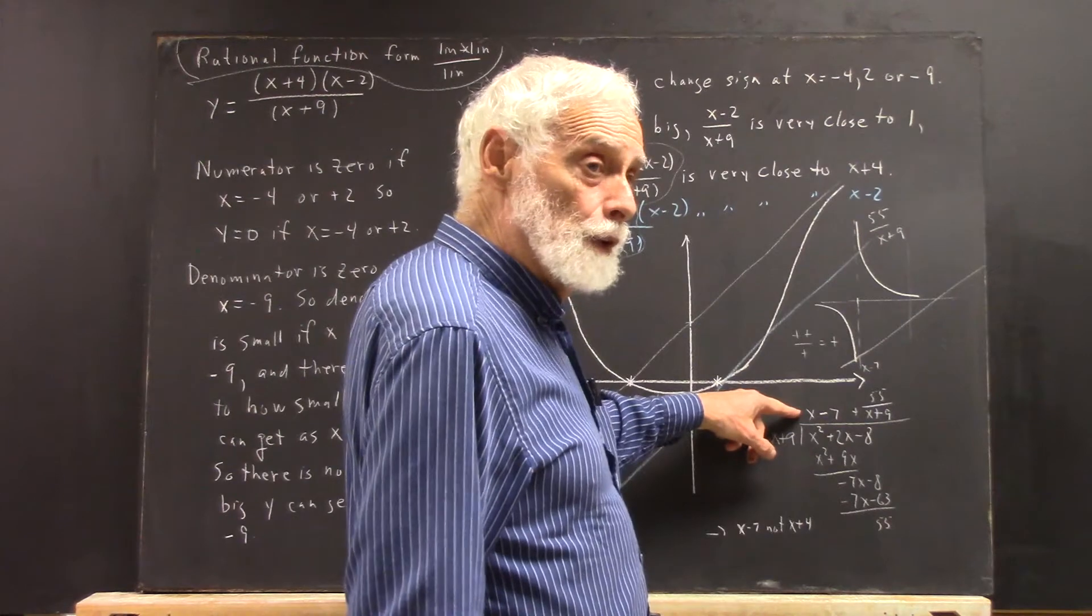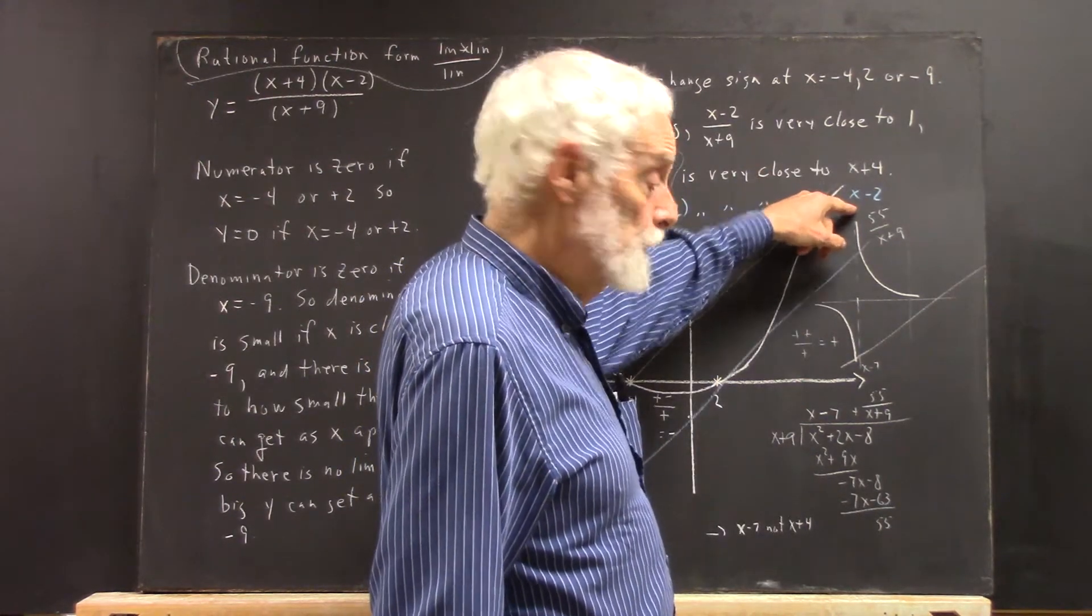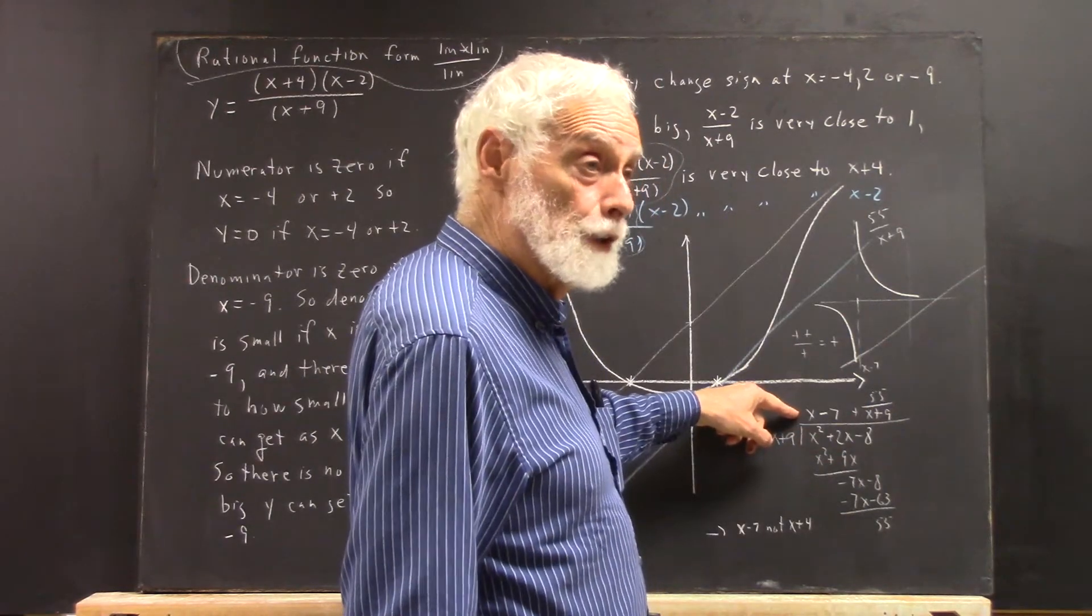So this means that the graph is going to get close to the graph of x-7, not x+4 or x-2. It's actually going to get close to x-7.